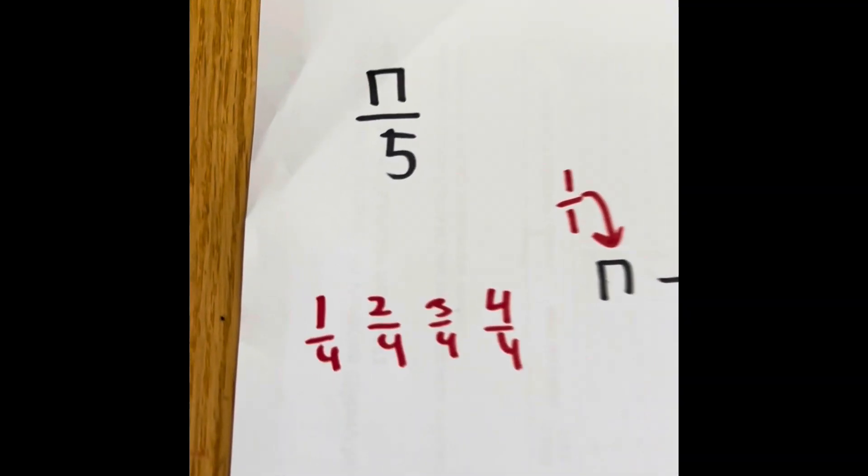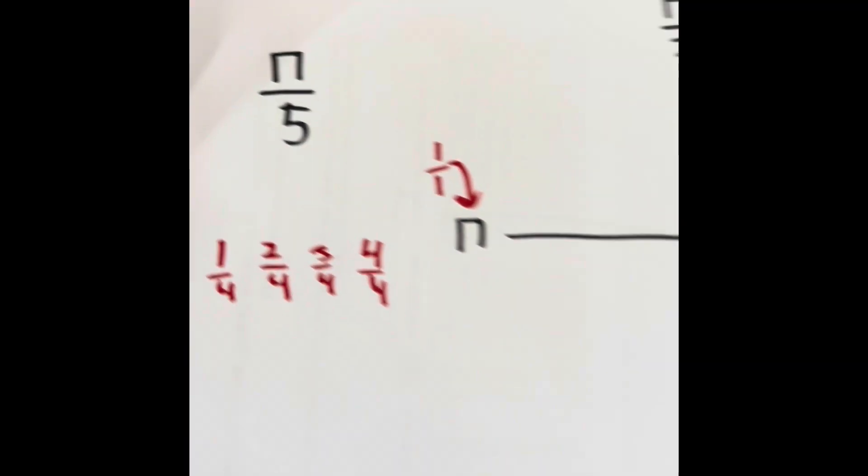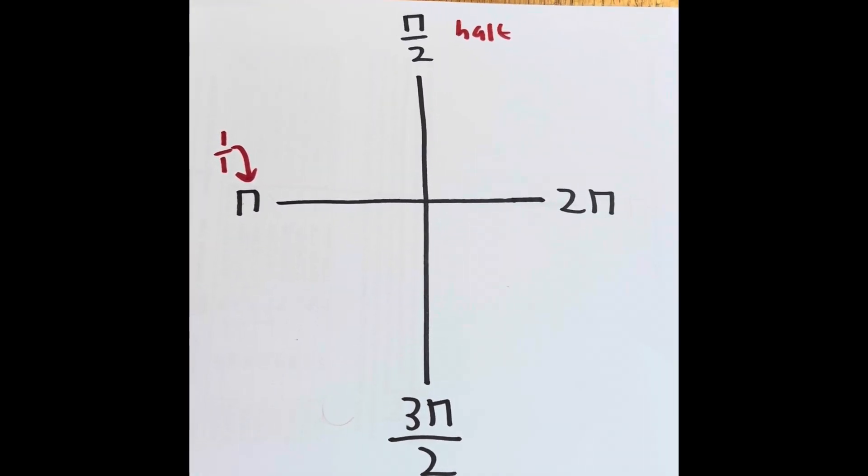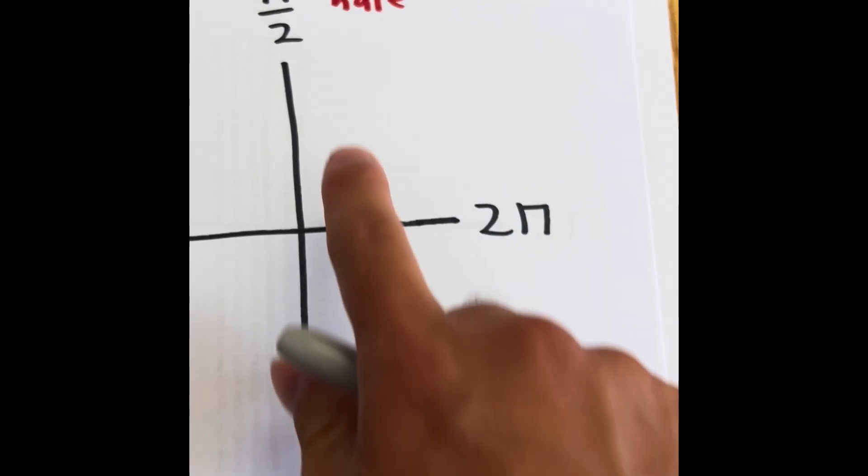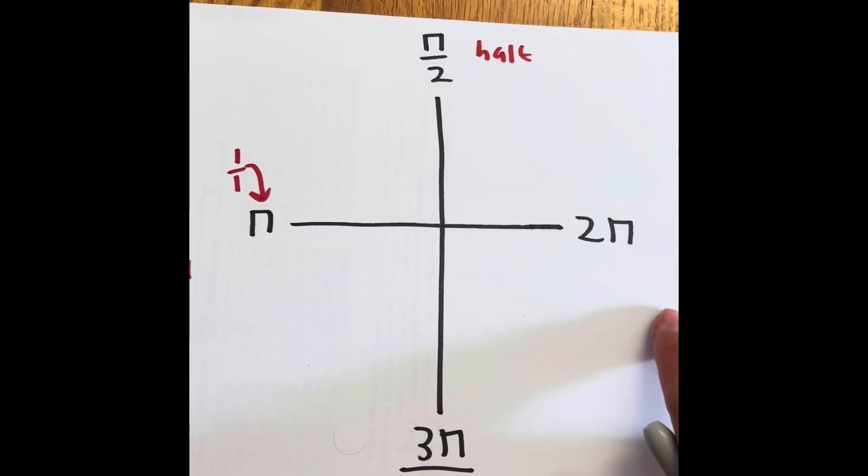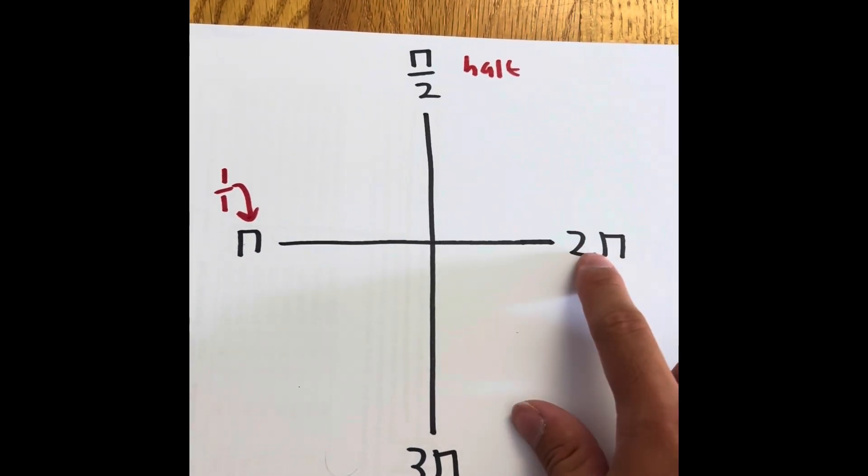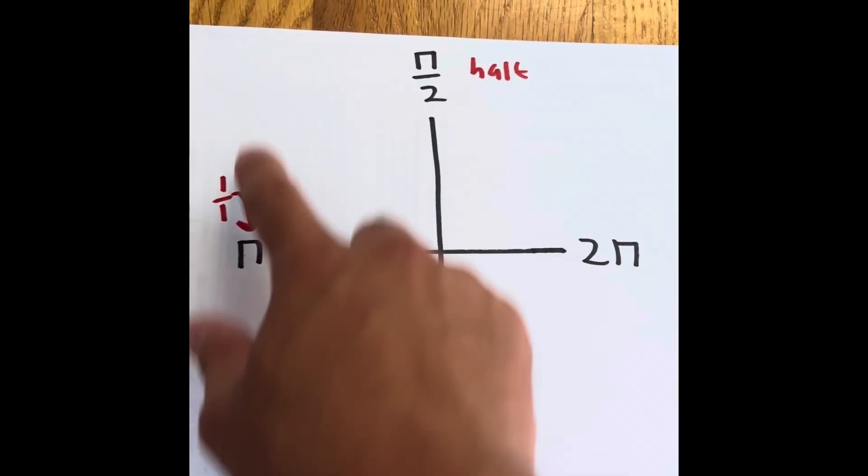But what about π divided by 5? Well, we know that 1 fifth is a lot smaller than 1 half. Therefore, it's going to be around here. So we have to somehow draw 5 equal pieces that go from 2π all the way to π.